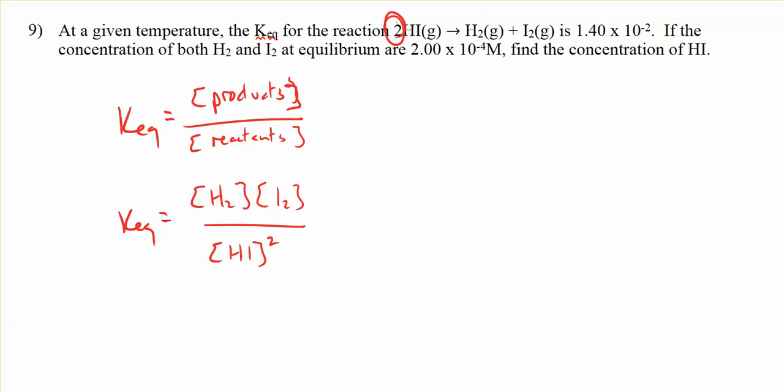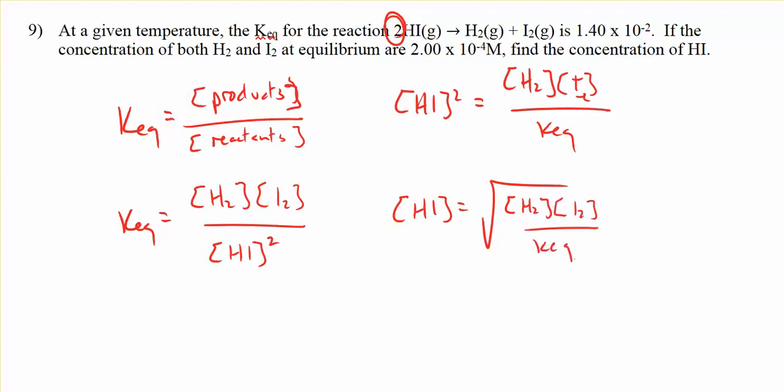I want to try to solve for the concentration of HI, so I'll isolate that variable. That'll give me the concentration of HI squared equals the concentration of H2 times the concentration of I2 over Keq. Or the concentration of HI equals the square root of H2 times I2 divided by Keq.